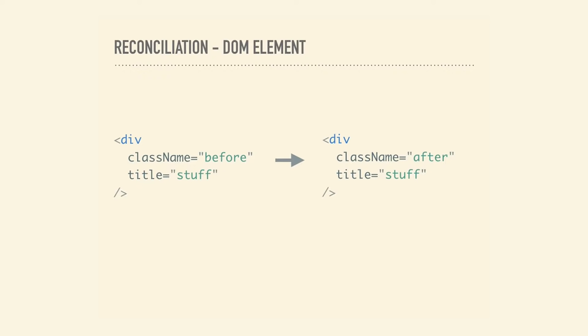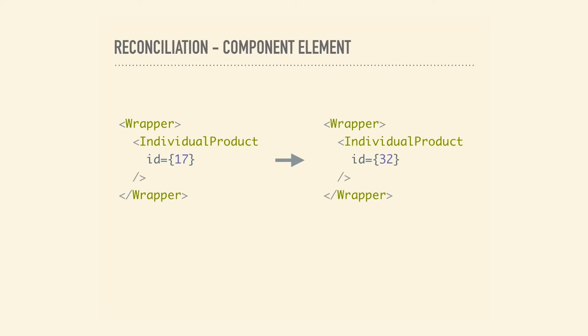There are actual under-the-hood differences between native DOM elements and component elements. When a class name changes on a native DOM element, React finds the DOM node and just modifies the class name — no need to change anything else. When a component element updates, the instance stays the same — it's maintained across renders. React updates the props of the underlying component instance to match the new element, then the render method is called. The diff algorithm recurses on the previous and new result, comparing previous to current until nothing is left to change.